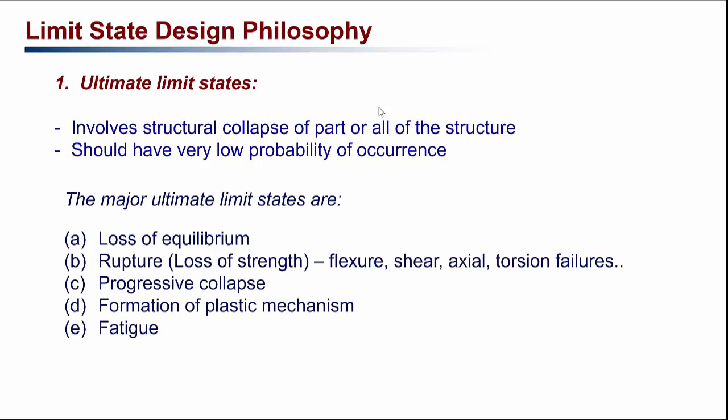Some examples of ultimate limit states include loss of equilibrium — for example, a retaining wall supporting soil can experience collapse or loss of equilibrium. For a structural beam or column, the ultimate limit state can be rupture or loss of strength, with failure in flexure, shear, axial, or torsional modes. Progressive failure is another kind, where failure of one member passes load to another, leading to collapse of the whole structure. Formation of a plastic hinge making the structure unstable, or fatigue failure, are also examples of ultimate limit state.